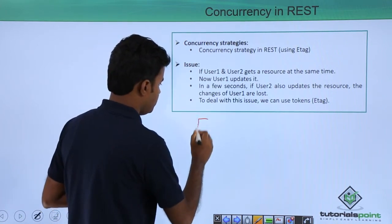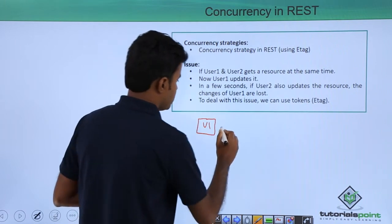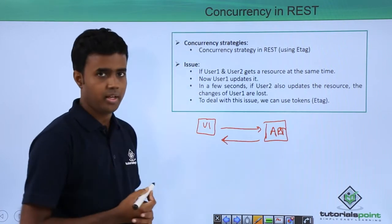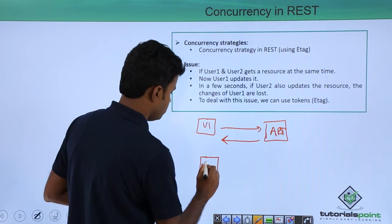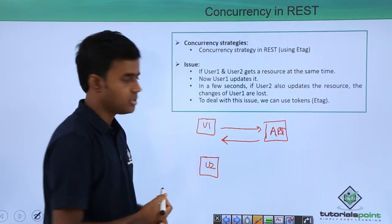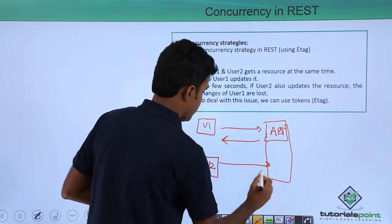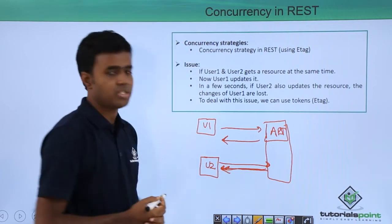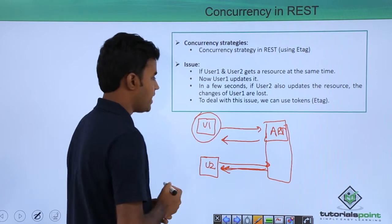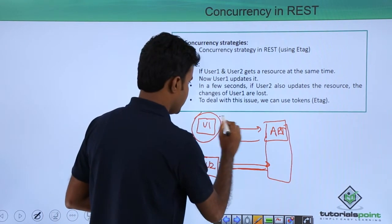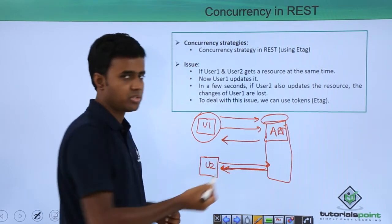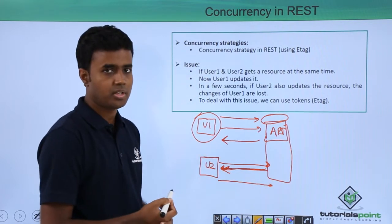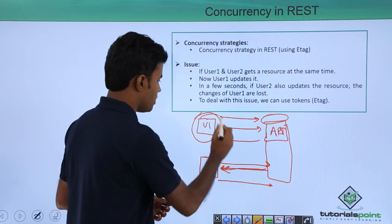Here we have user 1 who gets a resource from an API and the API responds with a resource. We also have user 2, probably within a gap of a few seconds, who requests the same resource to the API and the API responds with an HTTP response message. Now, if user 1 makes a change to the API, he sends a PUT request and makes a change to the same resource. If user 2 also makes some other change to the same resource, what happens is that the changes of user 1 are lost.